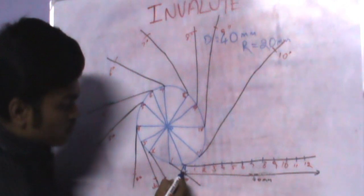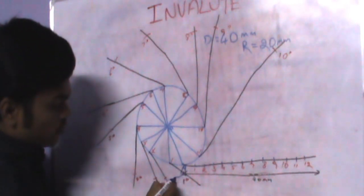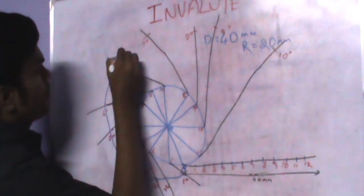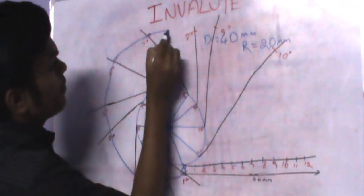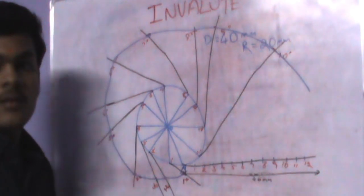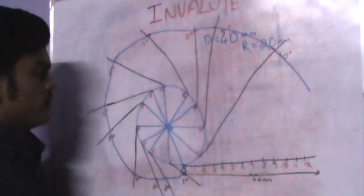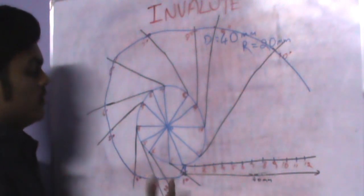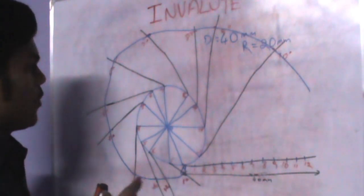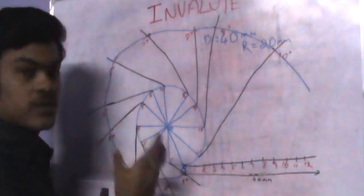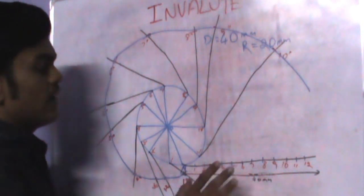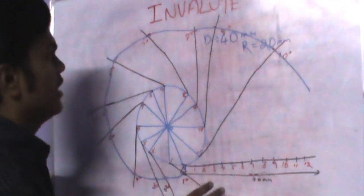Join all these arc points with a smooth curve — there should be no break in the curve. This is what the Involute looks like: how you unwind a thread or a sellotape from a circular coil. This is the graphical method of representing the Involute.